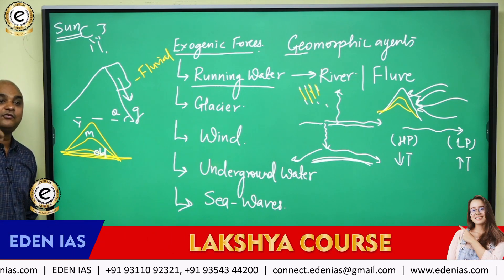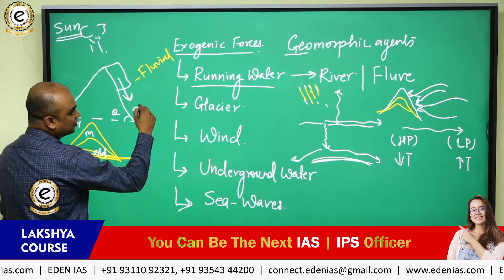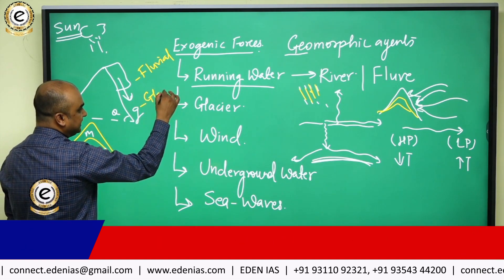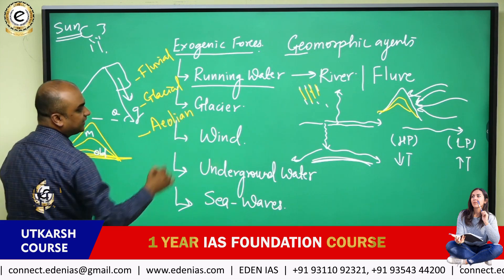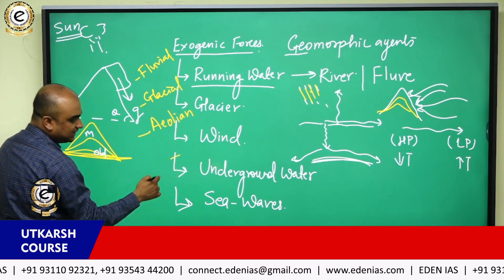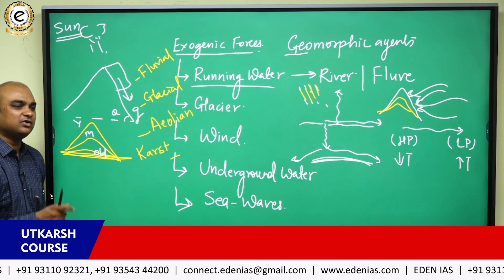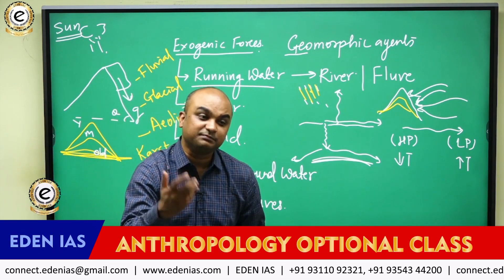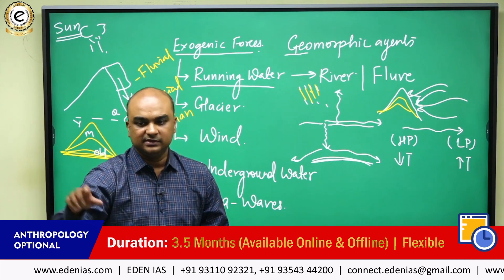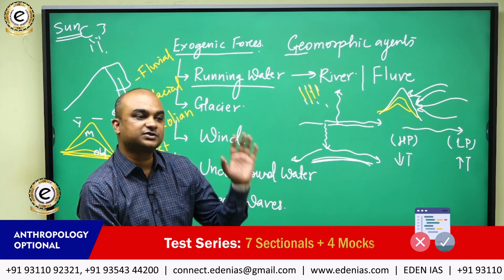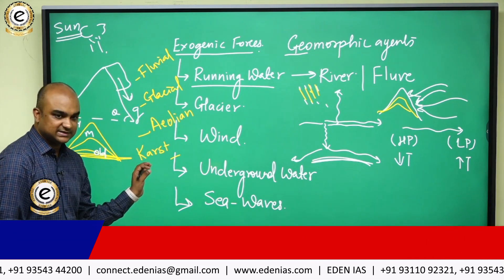The Aravallis are old fold mountains because their height is constantly reducing. The cycle of erosion generated by glacier is known as the glacial cycle of erosion. The one generated by wind is known as the aeolian cycle of erosion, best formed over deserts. The one generated by underground water is known as the karst cycle of erosion — named after the Karst region in erstwhile Yugoslavia, because limestone, which is most susceptible to dissolution by rainwater, is strongly developed there.